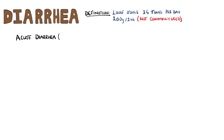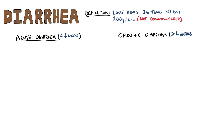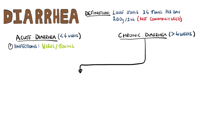First off, the causes of diarrhea. We can divide them into acute and chronic causes. Acute diarrhea is defined as lasting less than 4 weeks and is often caused by infections that are usually either viral or toxin-mediated. Typically, they will resolve spontaneously.